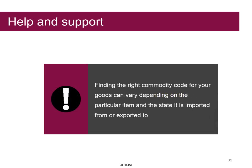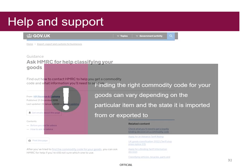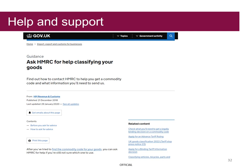Please note the complexity of finding the right commodity code for your goods can vary depending on the particular item and the country it is imported from or exported to. If you need further help to find the right commodity code, such as incomplete items or if the goods are packaged in sets, you can search the 'Ask HMRC for help classifying your goods' page on GOV.UK.